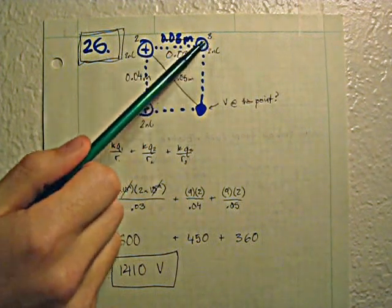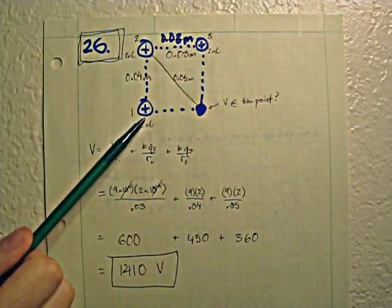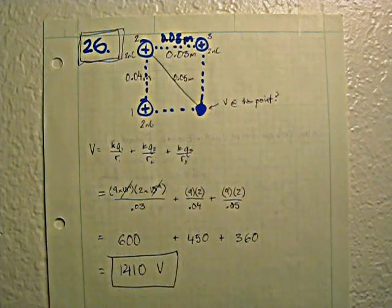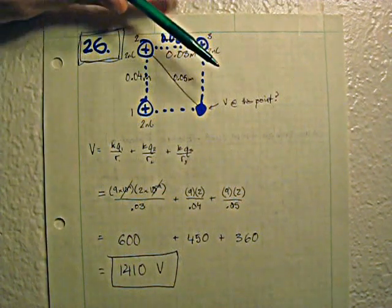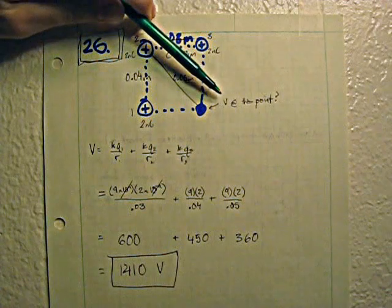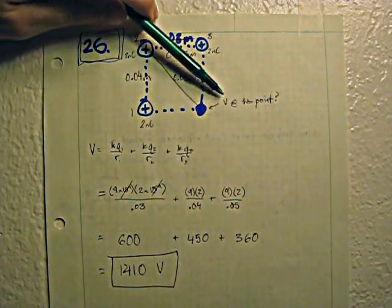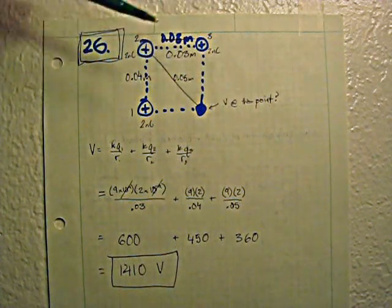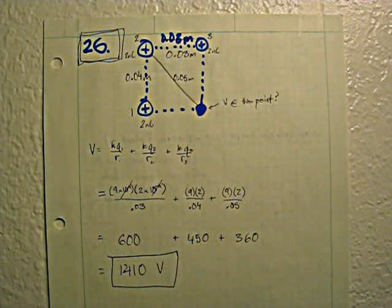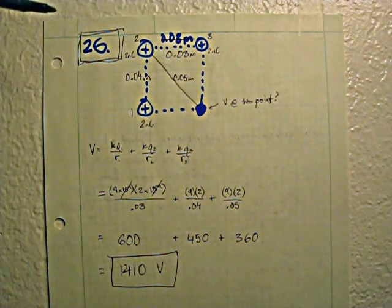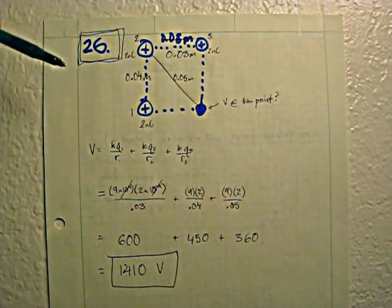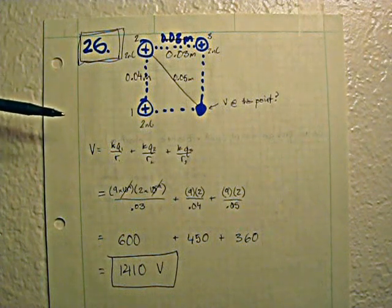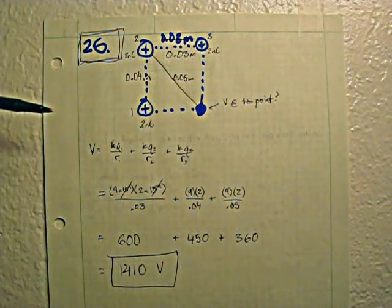Each charge is 2 nanocoulombs, and what it asks you to find is the electric potential at that point. So what you want to do is—this is a lot like the electric field problems in the sense that it utilizes superposition.